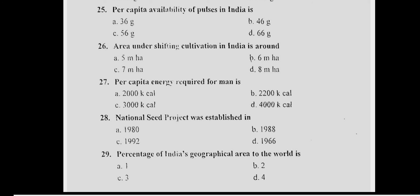Question 27: Per capita energy required for a man is Answer B, 2,000 kilocalories. Question 28: The National Seed Project was established Answer B, 1988.